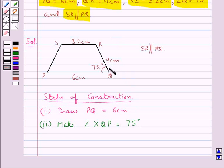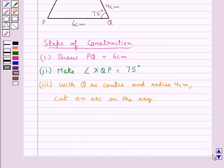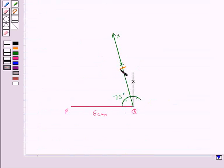Now in the rough sketch, as you can see, we have QR of measure 4 cm. So in the next step, with Q as the center and radius 4 cm, cut an arc on the ray XQ. So we have cut an arc of radius 4 cm, taking Q as the center. Let this point be point R.